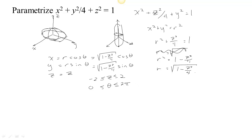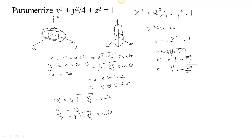That's a parametrization where we had switched x and y. So if we want a parametrization of this ellipsoid on its side, we just change the roles of y and z. We still have x equals √(1 − y²/4) · cos θ. And y is y. And z equals √(1 − y²/4) · sin θ. Everywhere there was a y in the parametrization I replaced it with z, and everywhere there was a z there is now a y. Then we have our bounds: y from −2 to 2, and θ from 0 to 2π.